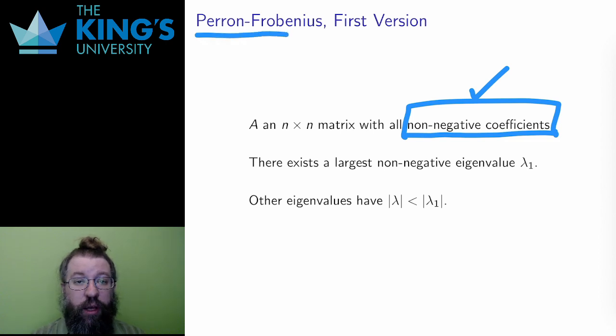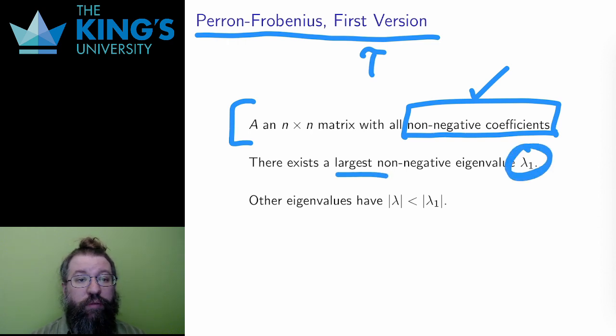It is called the Perron-Frobenius theorem. There are some technical details in the assumptions for the theorem, so I'll state a weak version of it first. If A is a matrix with non-negative coefficients, then there is a largest non-negative eigenvalue with an eigenvector that has all non-negative entries. All other eigenvalues have smaller absolute value than this.